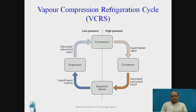In VCRS, there are mainly four elements which are called as: evaporator, compressor, condenser, and expansion valve or the expansion device, which may be of different types.